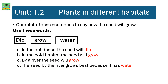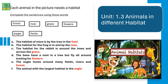Unit 1.2 Plants in different habitats. Complete these sentences to see how seeds will grow. Use these words: die, grow, and water. In the hot desert, the seed will die. In the cold habitat, the seed will grow. By a river, the seed will grow. The seed by the river grows best because it has water. In the cold habitat, the seed will grow.